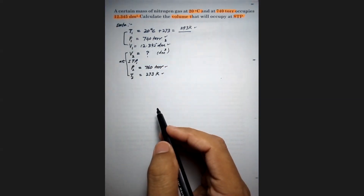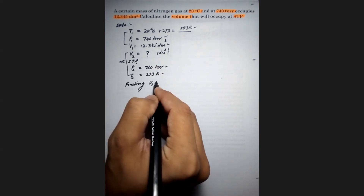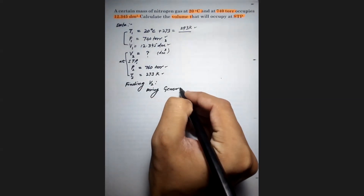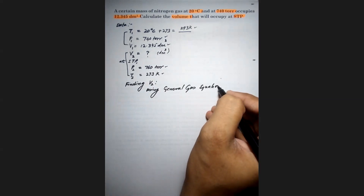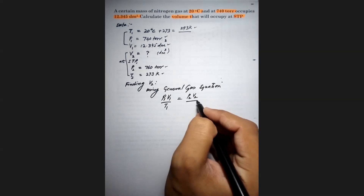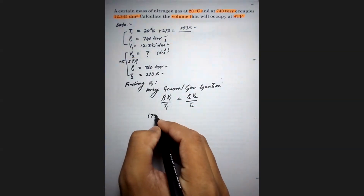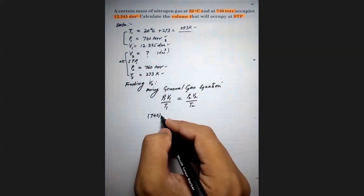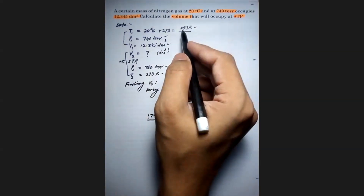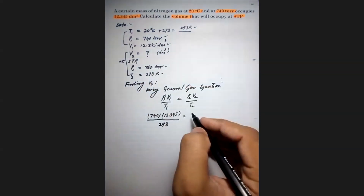Using the general gas equation P1V1/T1 = P2V2/T2, we substitute values to find V2. P1 = 740, V1 = 12.345, T1 = 293, P2 = 760, T2 = 273. Rearranging to solve for V2: V2 = (740 × 12.345 × 273) / (293 × 760).